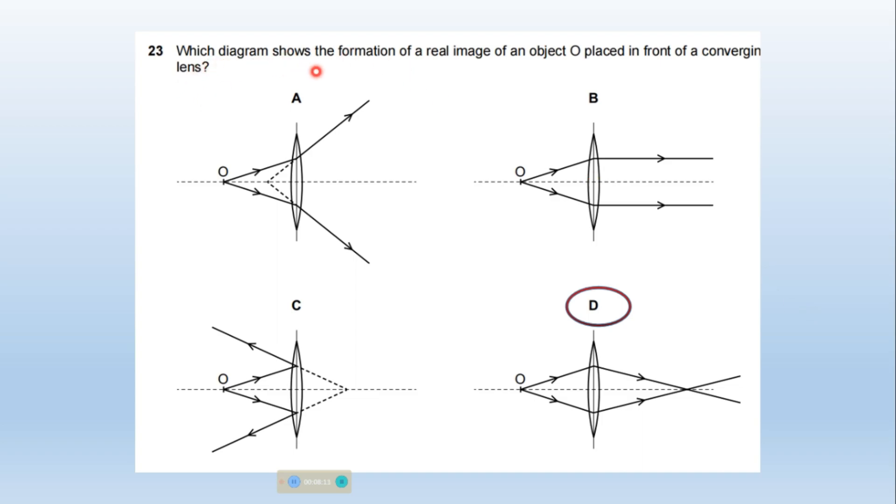Which diagram shows the formation of a real image of an object placed in front of a converging lens? A converging lens is a lens that converges the light waves. So option D is the right one.